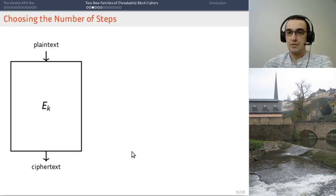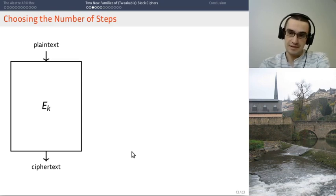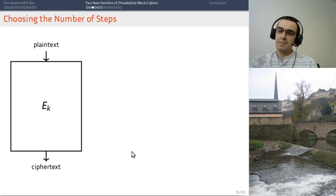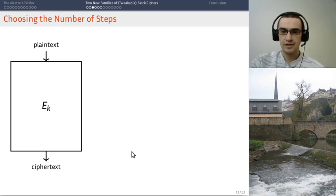But, this is a round structure. We still need to give a number of steps. So, this is block cipher EK. How would an attack work in practice? So, how do attacks work against block ciphers?